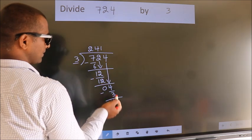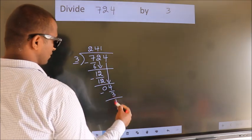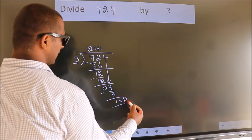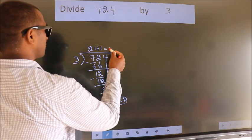No more numbers to bring it down. So we stop here. This is our remainder. This is our quotient.